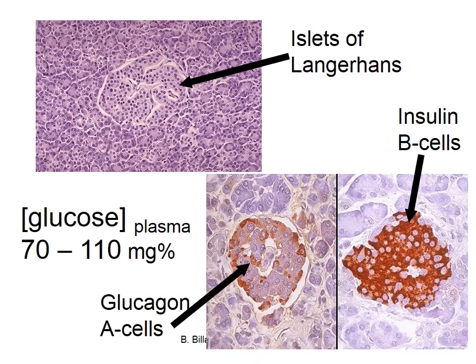Looking at the histology, the upper left panel shows an H&E-stained section of pancreas — most of that section is exocrine, but the black arrow points to the islet of Langerhans. The lower panels are stained preferentially for either glucagon or insulin. This brownish-red staining confirms that the majority of cells in the pancreatic islet are the insulin-producing beta cells, while the alpha cells, though fewer, are still importantly involved in making glucagon.